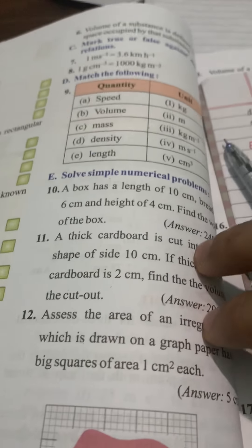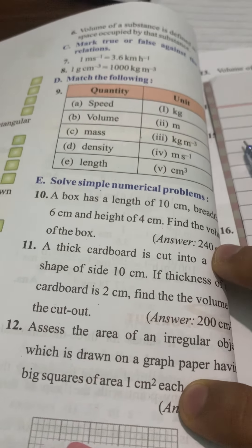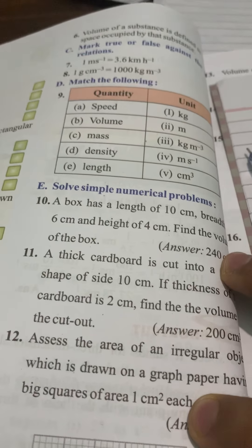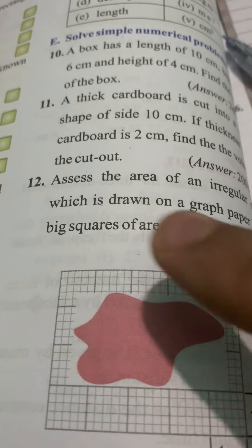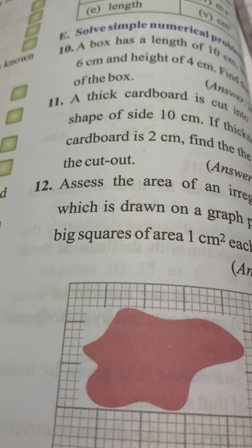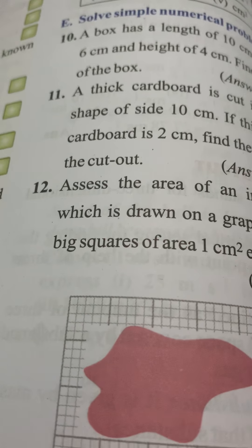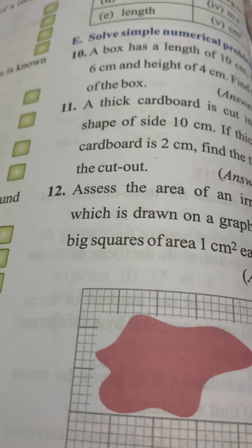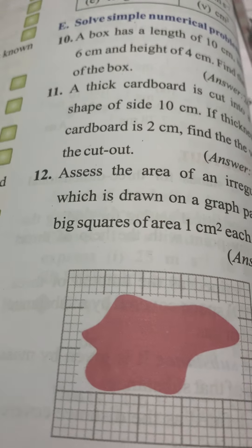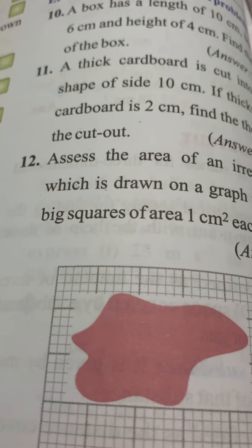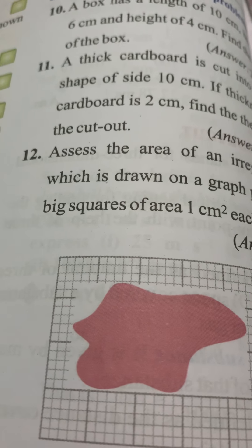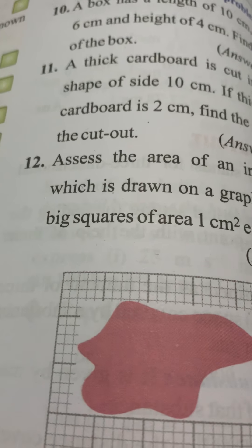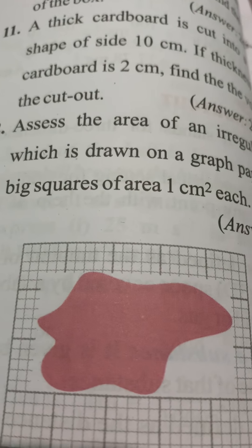Next is your 12th. Assess the area of an irregular object which is drawn on a graph paper having big squares of area of 1 cm square. In this question firstly we will try to see the given figure covers how many complete squares. Complete squares and also those squares which are covered more than half. I am repeating we will check this figure given to you covers how many complete squares and how many squares which are covered more than half.